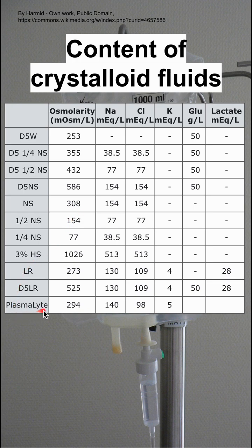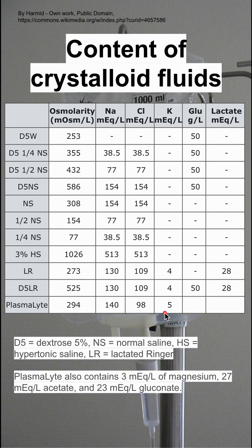Lactated Ringer's and Plasmalyte are the more balanced solutions. Lactated Ringer's has potassium, which we haven't seen so far, as well as lactate. Plasmalyte has potassium as well, but Plasmalyte also has magnesium, acetate, and gluconate in the mix.